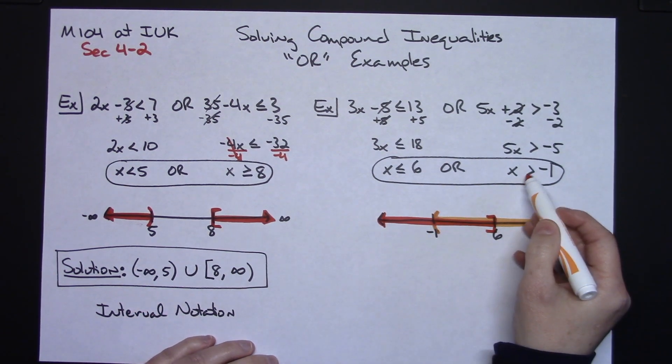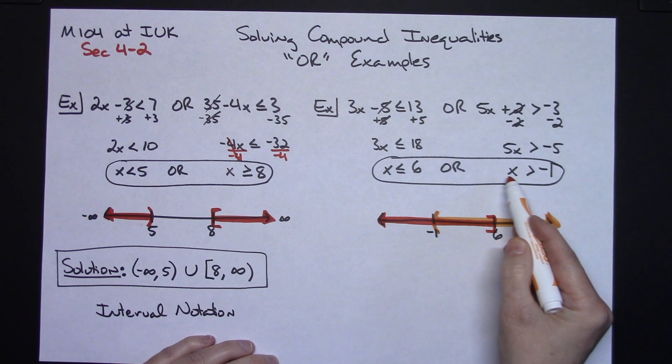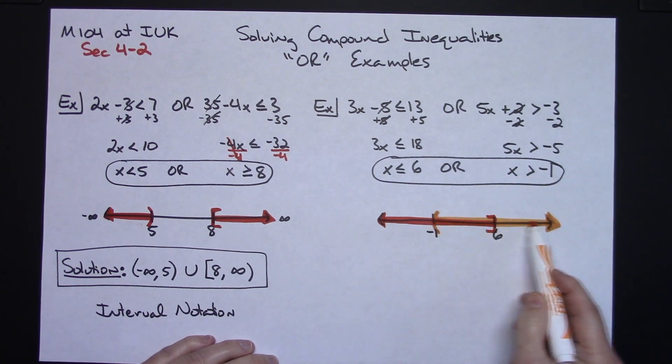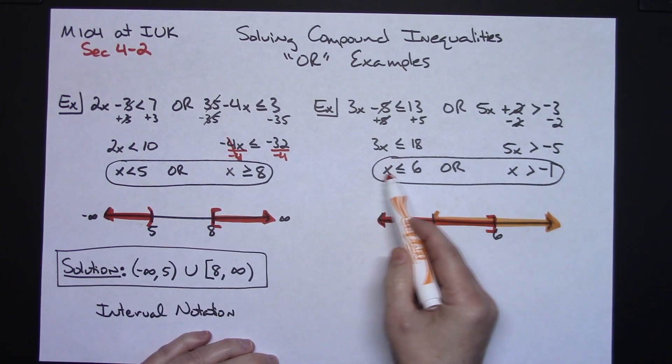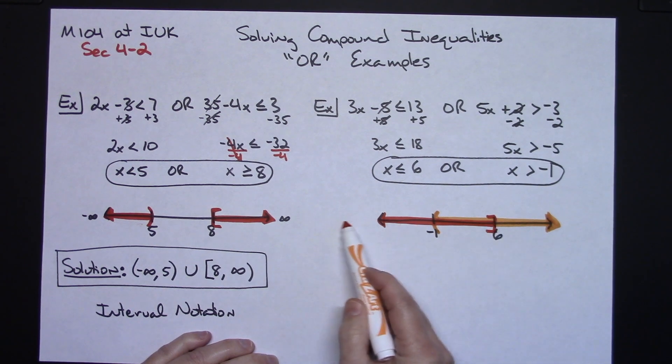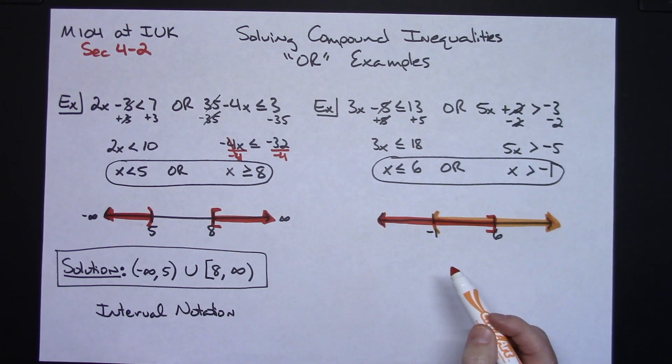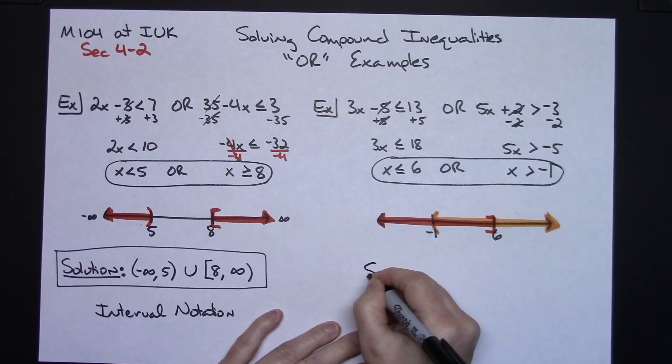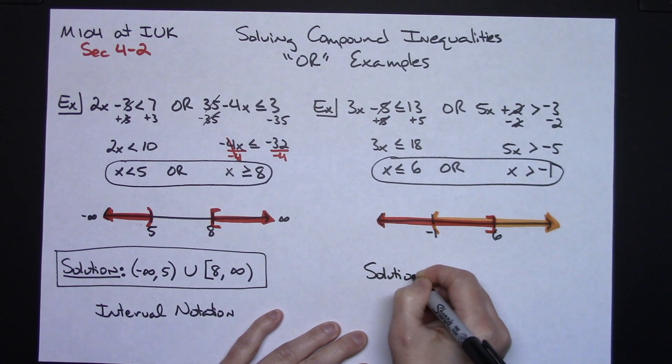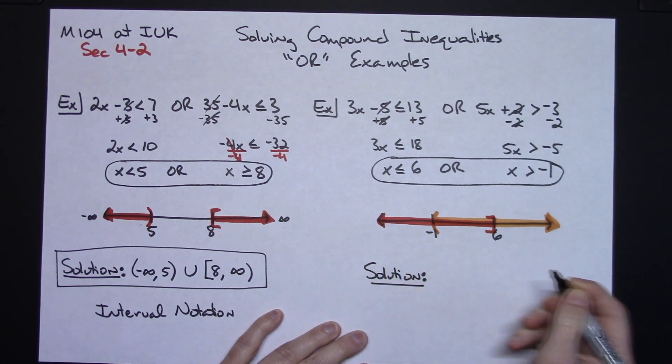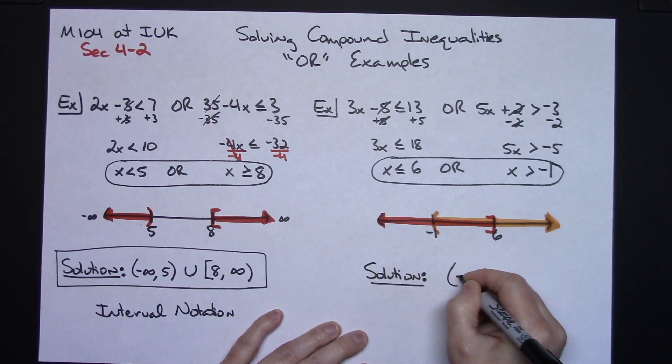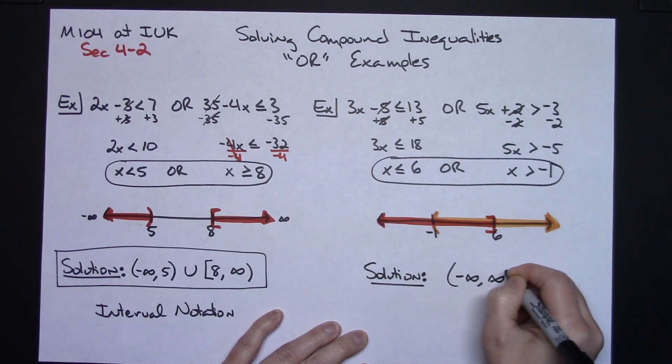Now granted, yes, this is an open dot on negative 1, so from this inequality, negative 1 is not included. But with this inequality, every number less than 6, negative 1 is included. So ultimately, all the numbers on the number line are included. And so on this one, your solution would be all real numbers or in interval notation, negative infinity to positive infinity.